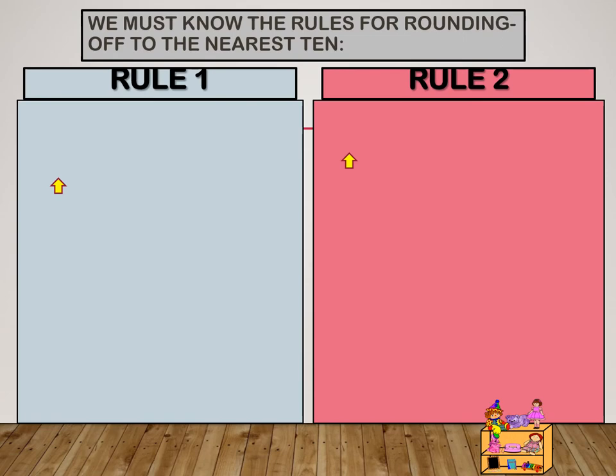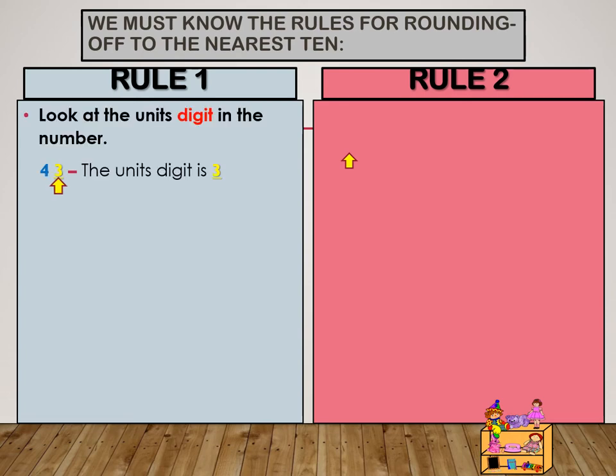We must know the rules for rounding off to the nearest 10. Look at the unit's digit in the number — for example, 43. The unit's digit is 3.